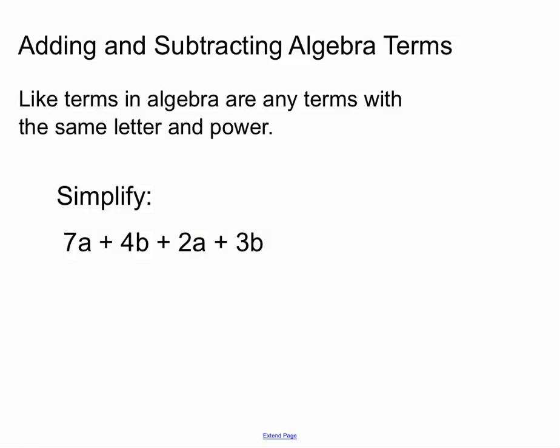Another example here, we have 7a plus 4b plus 2a plus 3b. Let's see what like terms we can pick out here. You'll notice in blue there we have 7a and 2a that can join together, so we can make 9a out of that. And there's also another pair of like terms there, the b pair, so we can have 4b plus 3b and make 7b out of that.